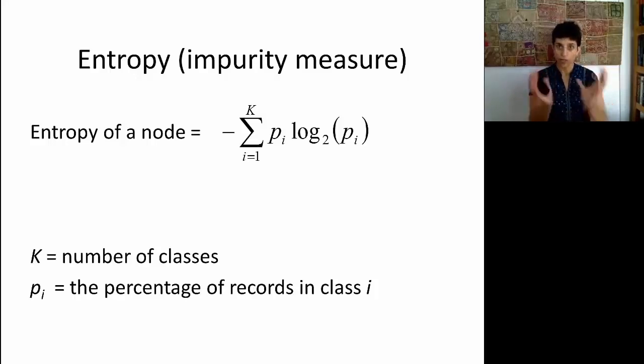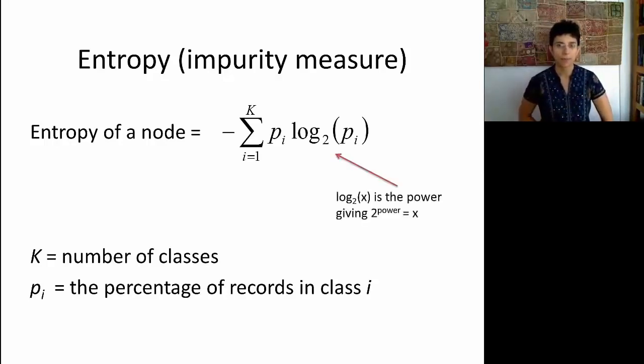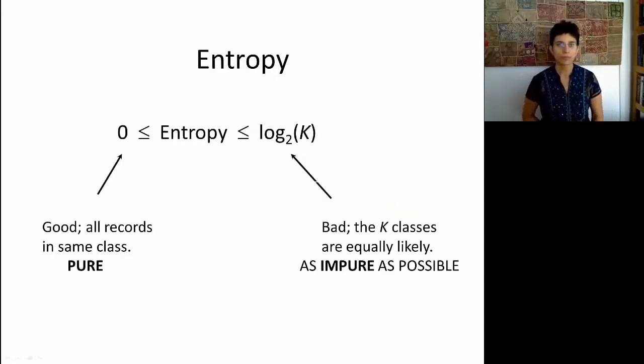So to give you a feel what the entropy measure is, the entropy of a node or a collection of records is simply defined by this equation. K is the number of classes, so in the beer example it's 2, and p_i is the proportion of records in class i. So all we need to know is for that group of records what percentage belongs to each class. Now notice that we have a logarithm base 2 here, which, to remind you, means we're looking for the power so that 2 to that power is equal to the number.